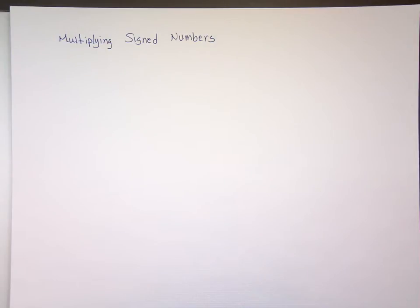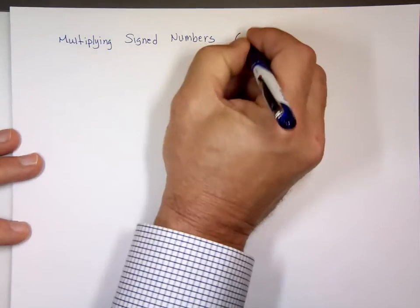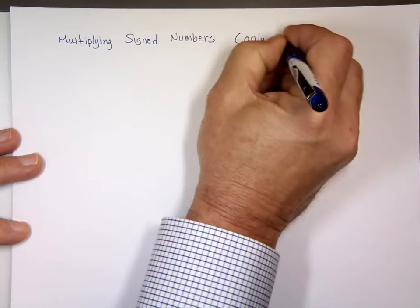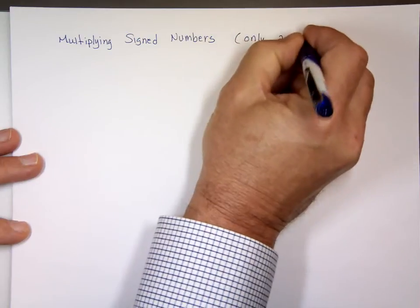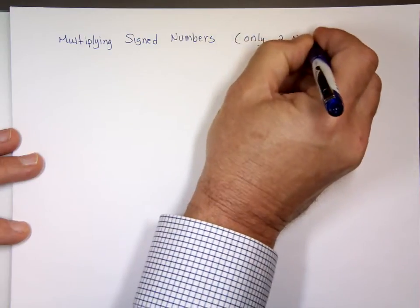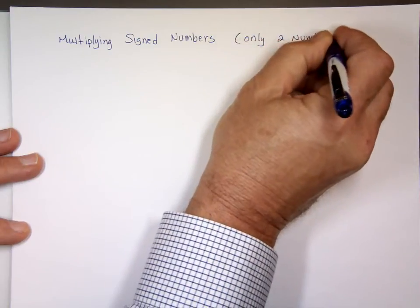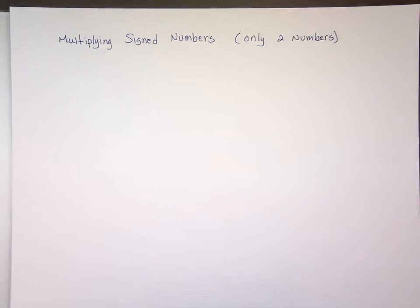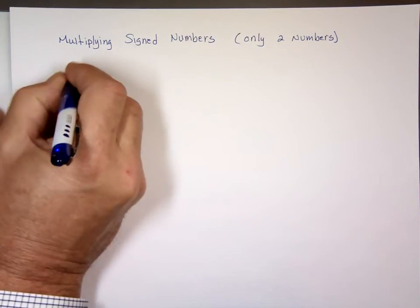I'm talking about just multiplying two numbers only. Only two numbers. Then we'll expand on that after that. Here's the rule for them.